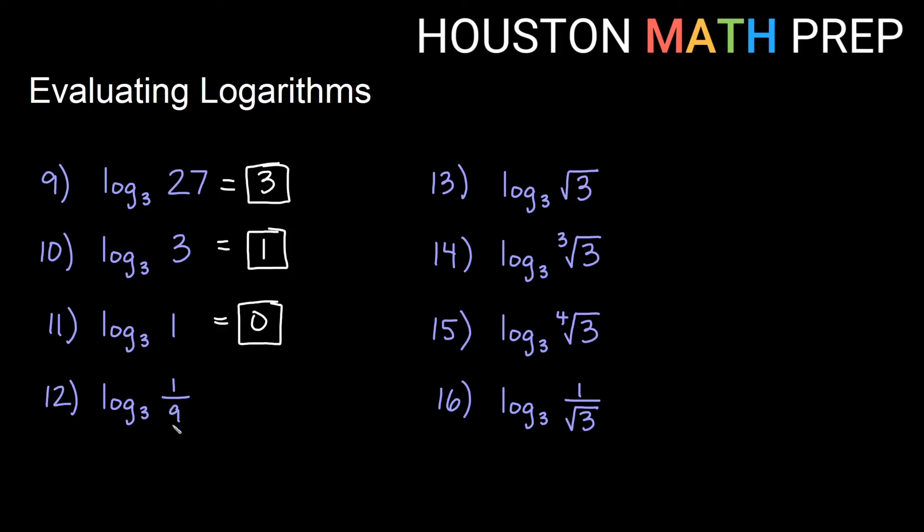Now we have a fraction so this is going to be a reciprocal, so I know it's going to be negative something. This is a reciprocal power of 3. 3 to what gives me 1 ninth? Don't think about the reciprocal so much at first. 3 to what power just gives us 9? 3 squared gives us 9, so if it was just 9 we would say 2, but since it's the reciprocal our answer is negative 2. 3 to the negative 2 gives us 1 ninth.